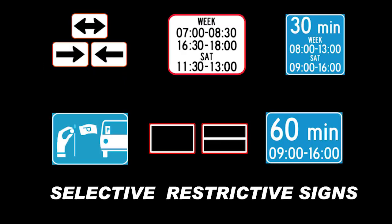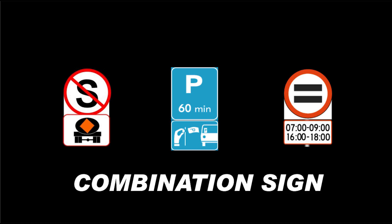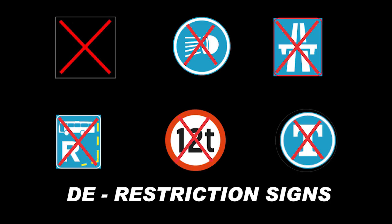Selective restriction signs, also known as secondary signs, are always placed below a regulatory sign to indicate that the regulatory sign applies only to certain hours, conditions, or road users. When placed together, the combination is referred to as a combination sign. If a large 'X' is placed over a regulatory sign, it becomes a restrictive sign, meaning the regulatory sign no longer applies.